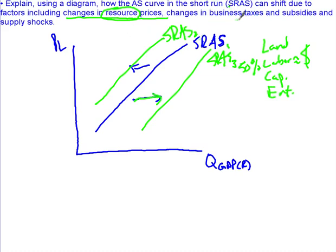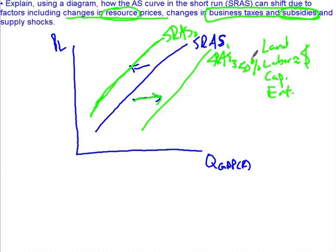The second determinant is changing business taxes and subsidies. What does a tax do to a business? If they jack up corporate tax rates to fifty percent, it becomes costlier for businesses to operate, shifting the short run aggregate supply curve left. Conversely, a subsidy — which is basically the opposite of a tax, giving companies money — decreases their cost and shifts the curve to the right.